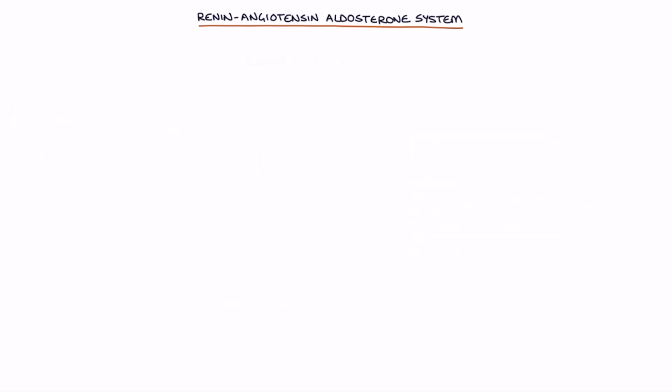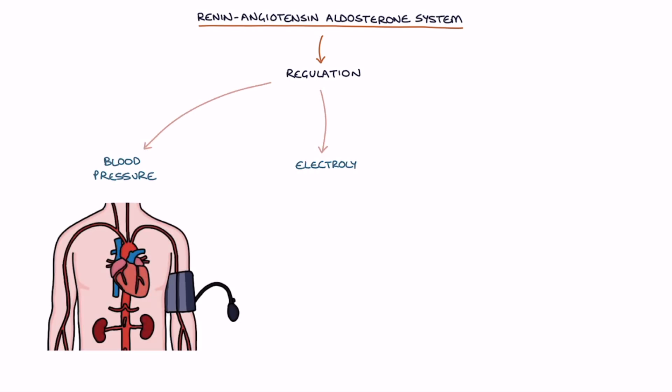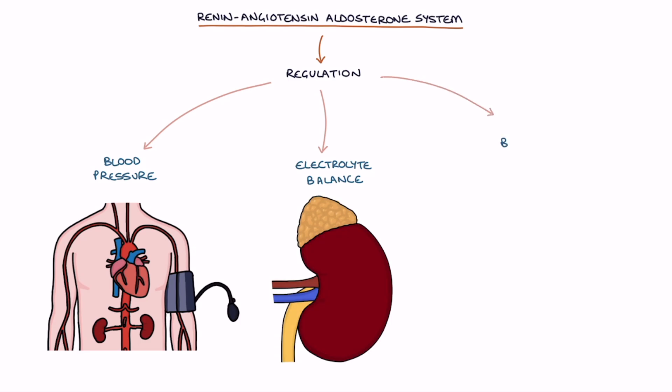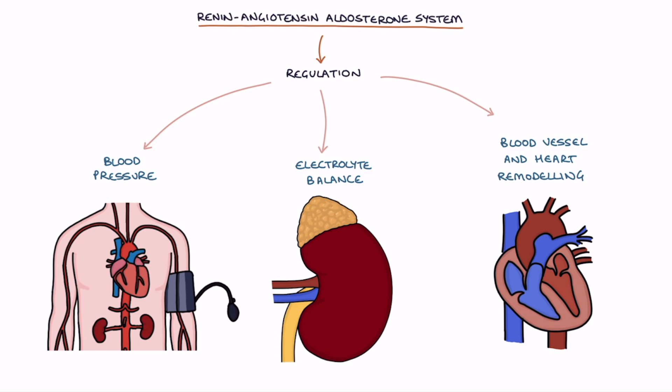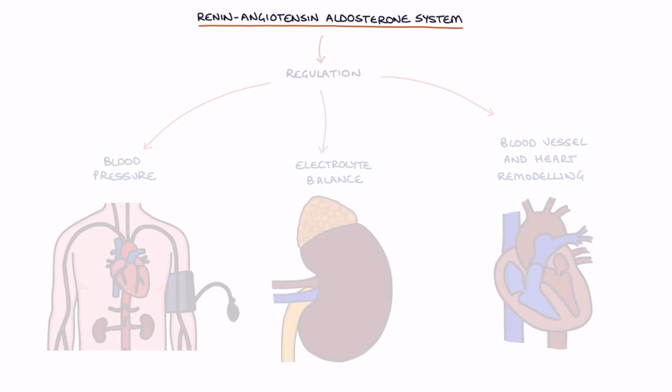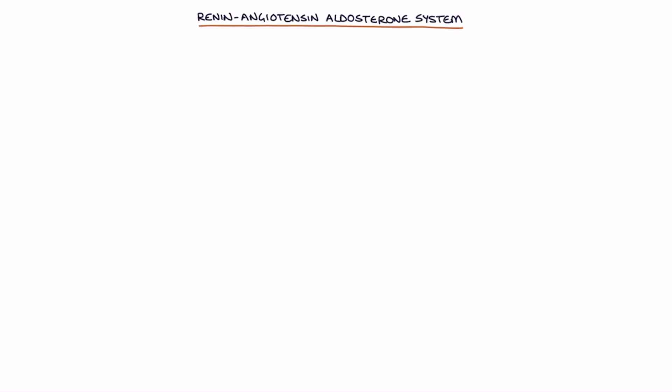The renin angiotensin aldosterone system or RAAS is central in the regulation of blood pressure, electrolyte balance, and blood vessel and heart remodeling. So let's go through the steps in the renin angiotensin aldosterone system.